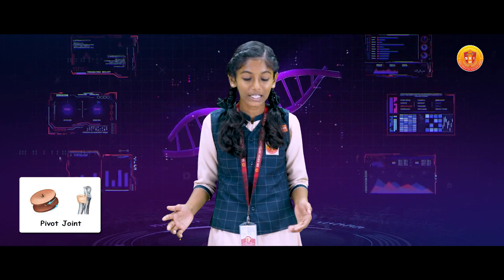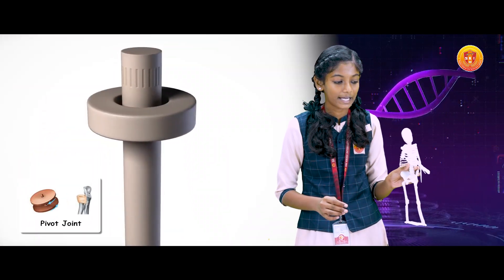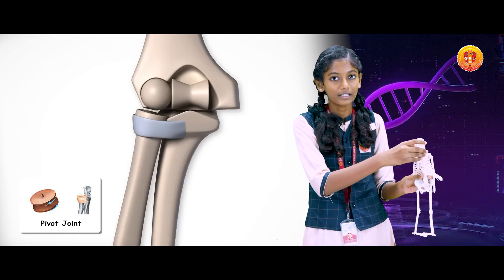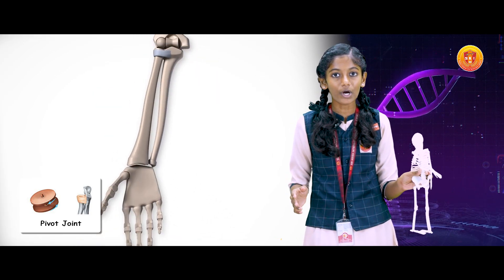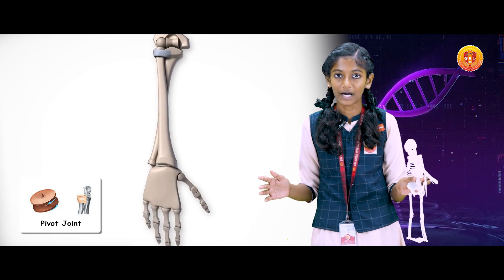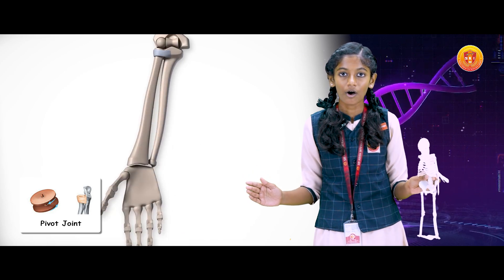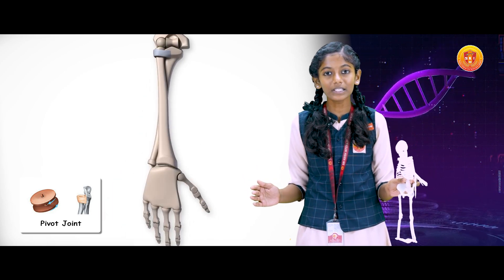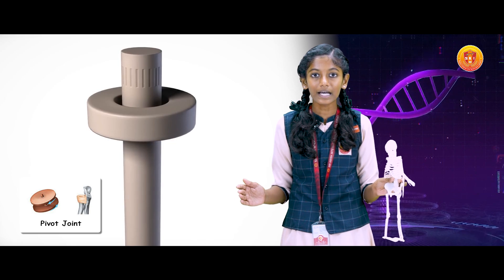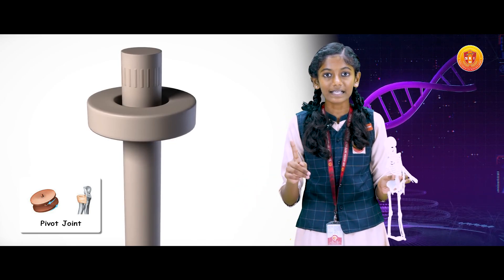Next, we shall see the pivotal joint. The pivotal joint allows the head to move sideways, forward, and downward. Do you know that the pivotal joint is very important? Without it, we cannot move our head. The skull makes a pivotal joint with the first two vertebrae of the vertebral column. The pivotal joint is also known as the rotatory joint, because it allows the movement of body parts on a single axis.